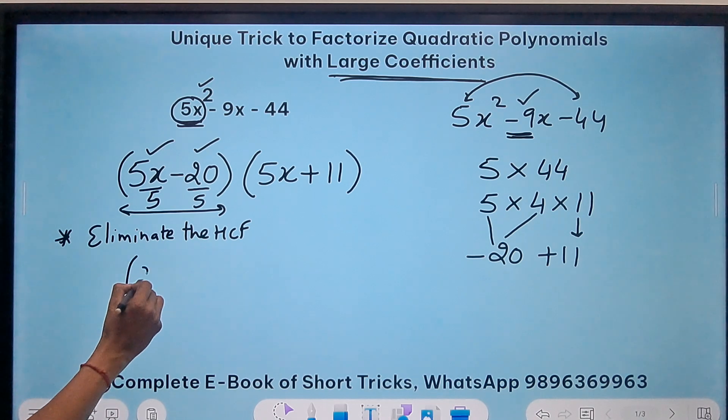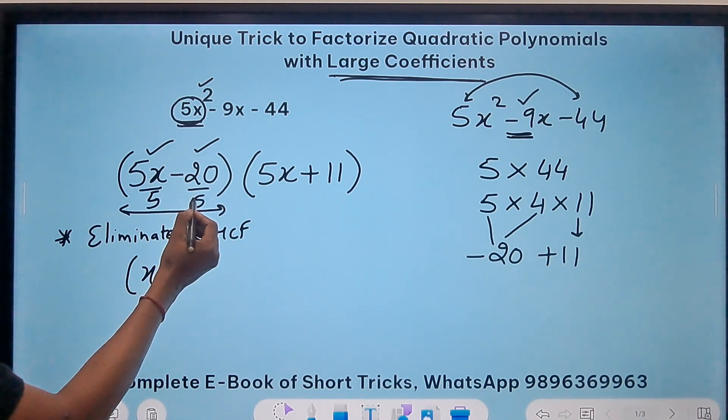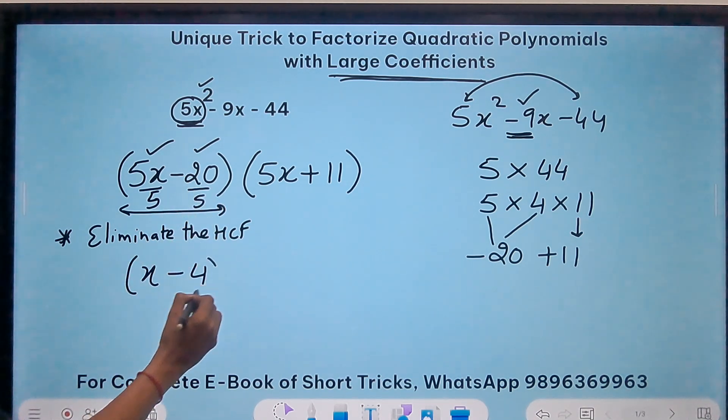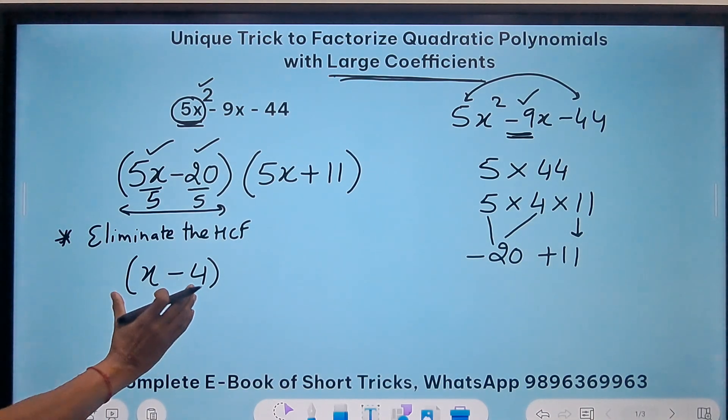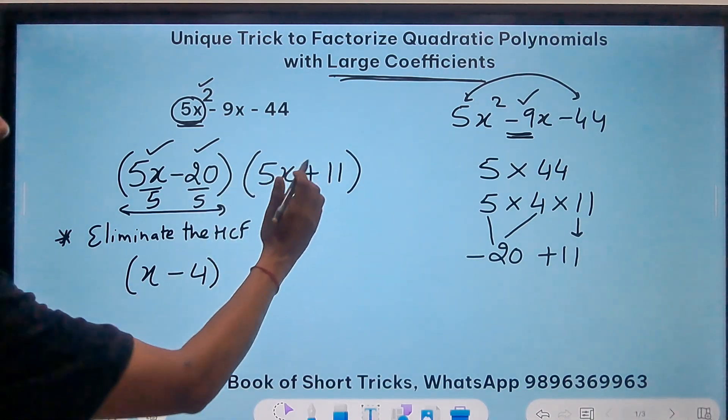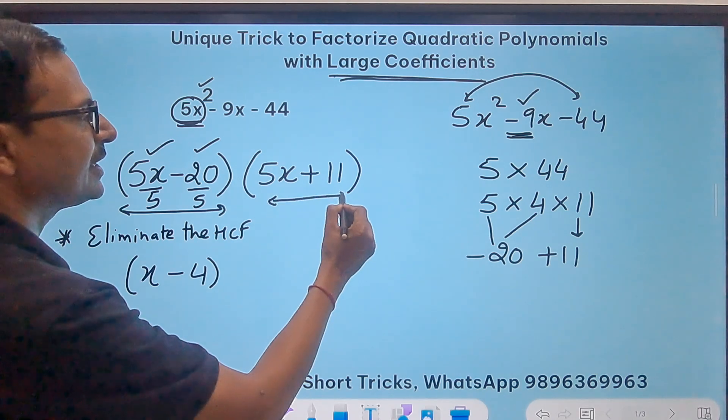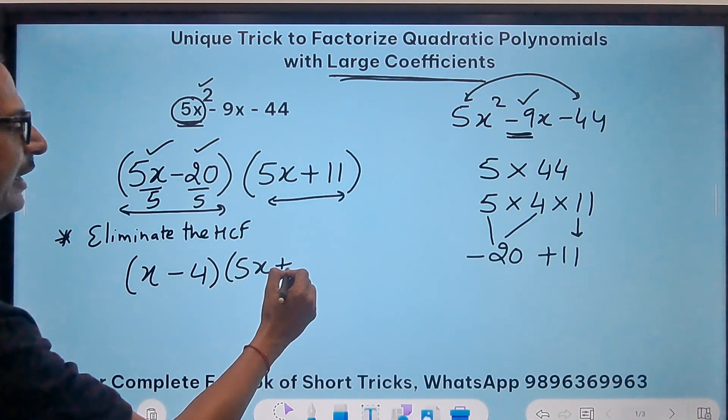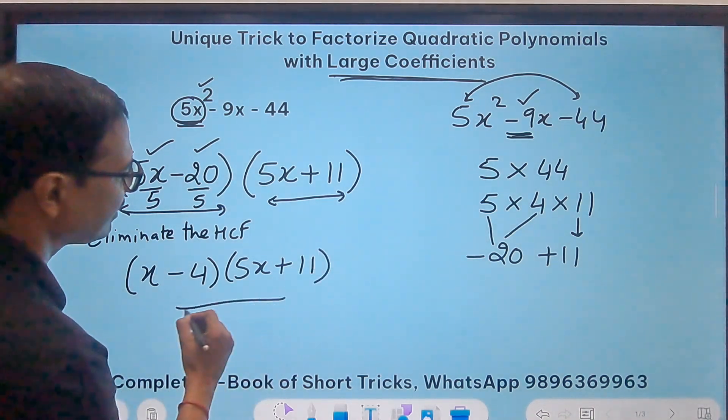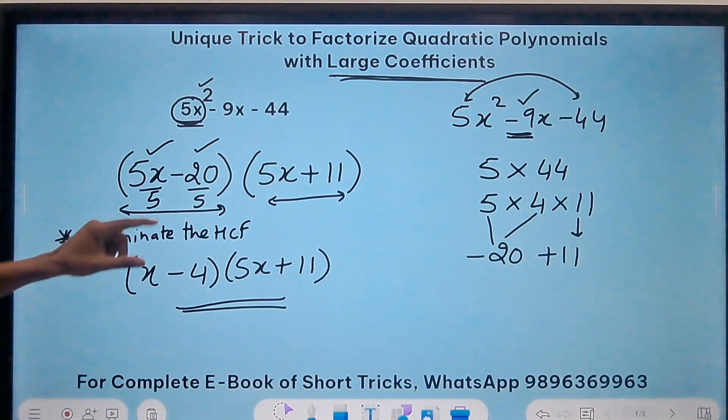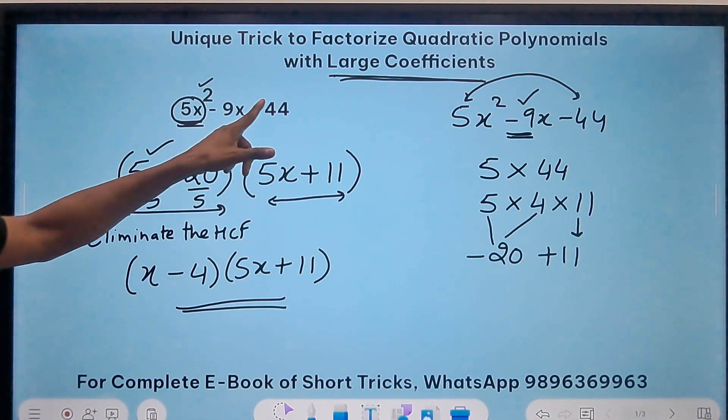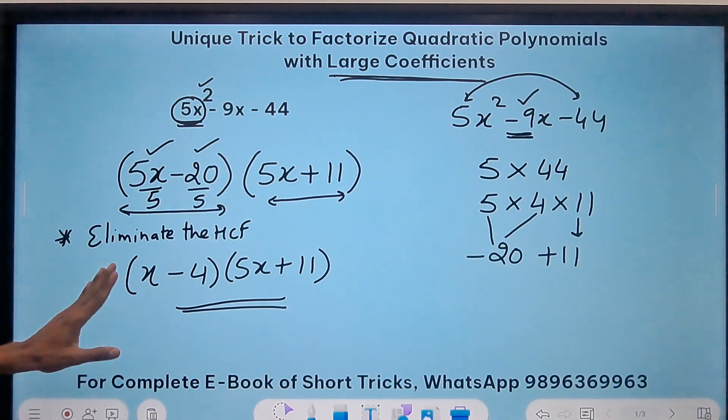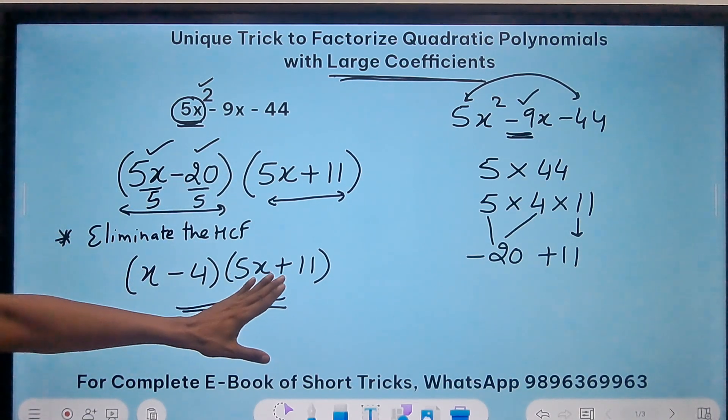Now you see there is no other common factor in the bracket, and 5x plus 11 I don't think there is any common factor here. So 5x plus 11 will be retained as it is, thereby giving us the factorization of 5x square minus 9x minus 44 as x minus 4 and 5x plus 11.